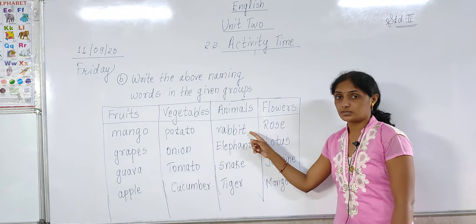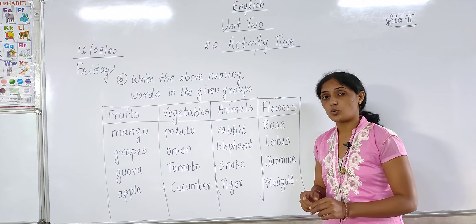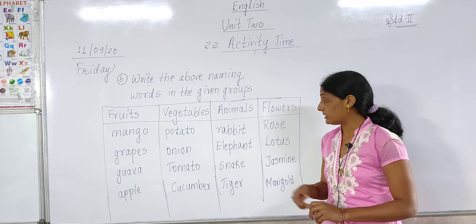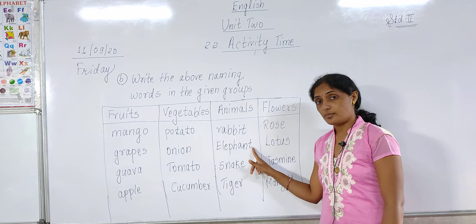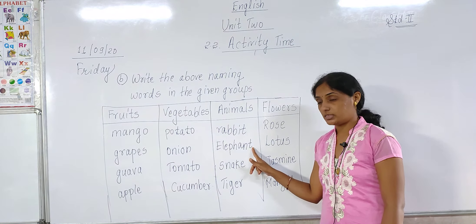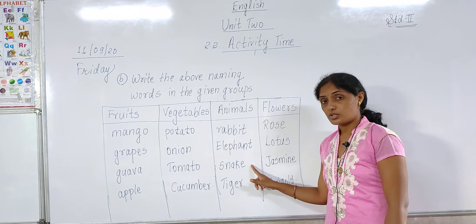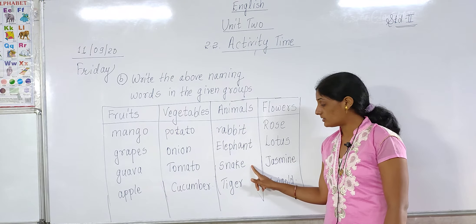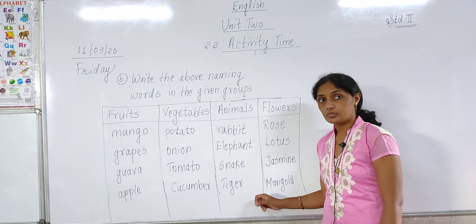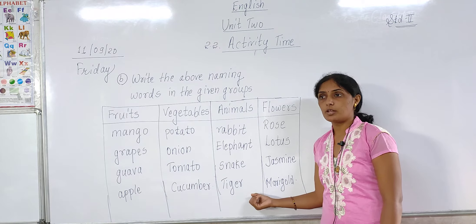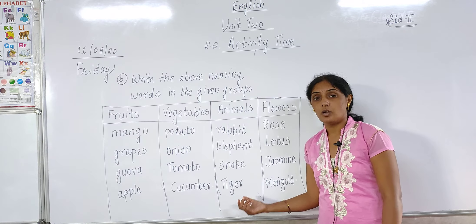Next one is rabbit. What is rabbit called in Marathi? Rabbit means sasaap. Elephant means hatti in Marathi. Snake means saap. Tiger — come on, tell me the meaning of tiger in Marathi. Tiger means waag.